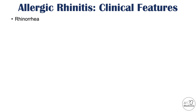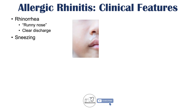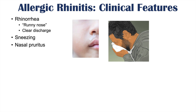The clinical features of allergic rhinitis include rhinorrhea — a runny nose — where histamine and cytokines act on mucous glands to increase mucus production. The discharge is notably clear. Sneezing also occurs both due to mucus irritation and histamine acting on the trigeminal nerve. Nasal pruritus, or an itchy nose, is also a common symptom.